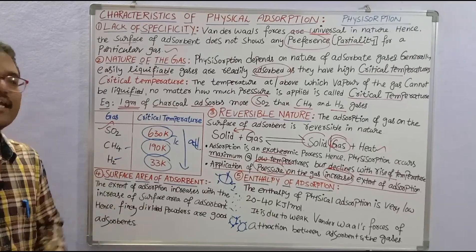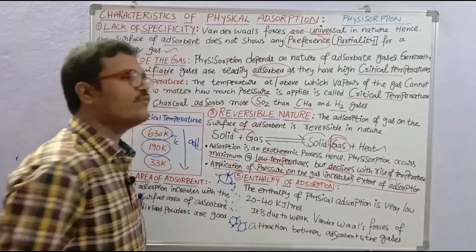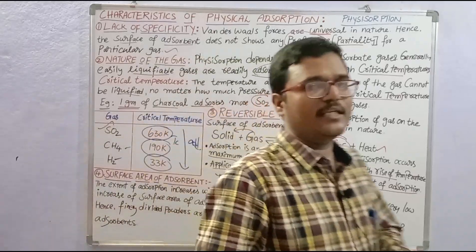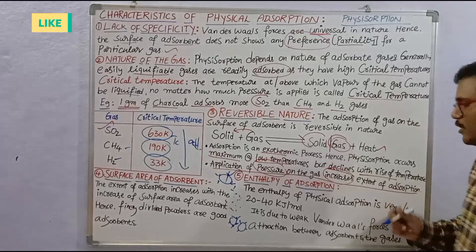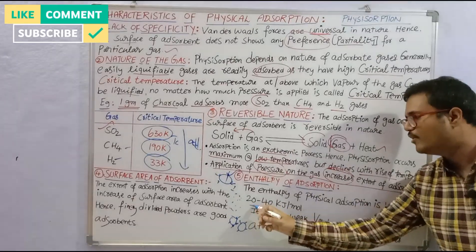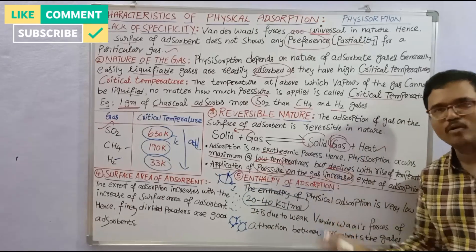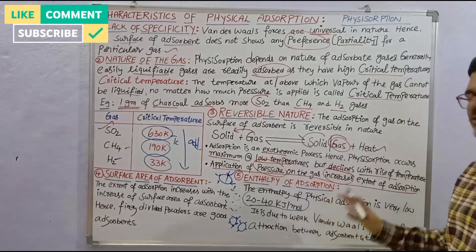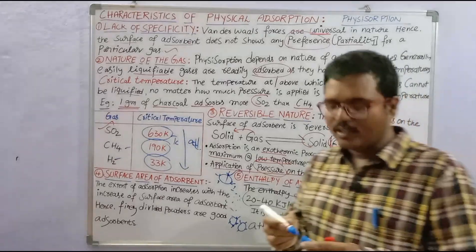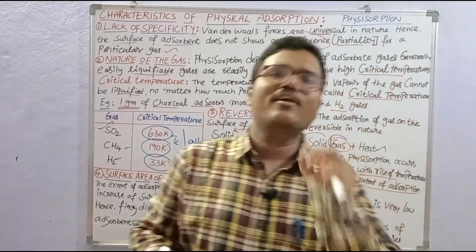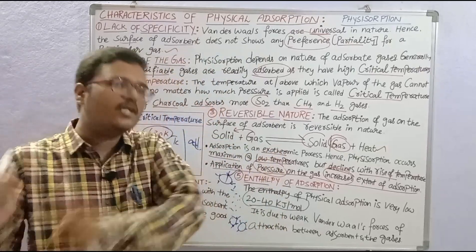The last characteristic of physical adsorption is enthalpy of adsorption. Physical adsorption is an exothermic reaction, but the enthalpy of physical adsorption is very low — the value is 20 to 40 kilojoules per mole. The reason is simple: in physical adsorption, there are always weak Van der Waal interactions between the gas and the adsorbent.